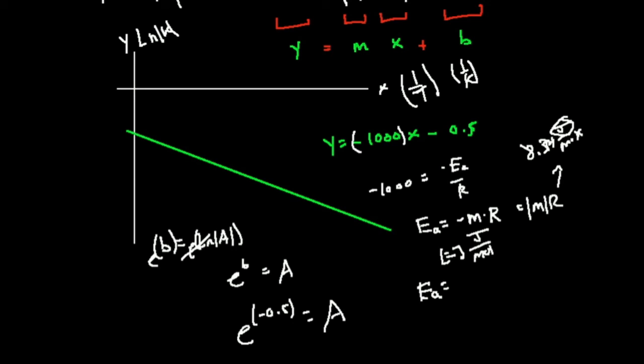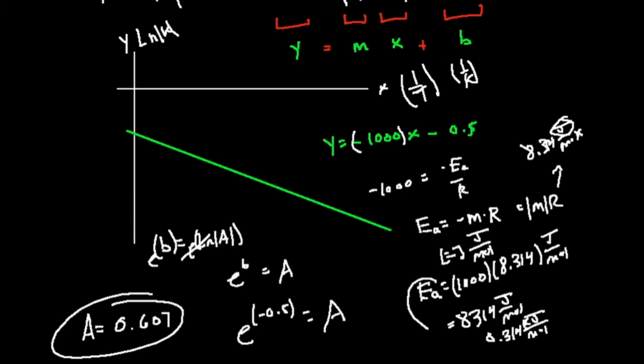In the case of activation energy, this is going to be equal to negative, my slope is a thousand, so this is going to be 1,000 times 8.314, and this whole thing is going to have units of joules per mole. I can just tell you the activation energy here is 8,314 joules per mole, or 8.314 kilojoules per mole. If you plug this into your calculator, the exponential factor, e to the negative 0.5, that value, our A is going to be about 0.607. And then this is our activation energy right there.